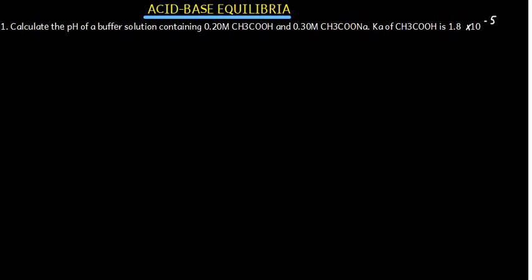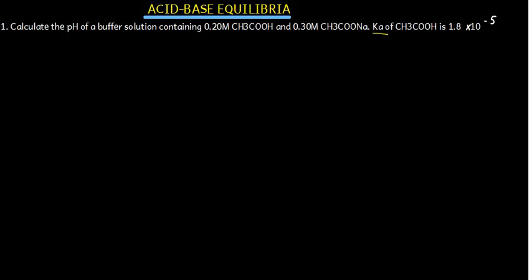Given an equation, calculate the pH of a buffer solution containing 0.20 molar ethanoic acid and 0.30 molar sodium ethanoate. We've been given the Ka of ethanoic acid as 1.8 times 10 to the power negative 5.